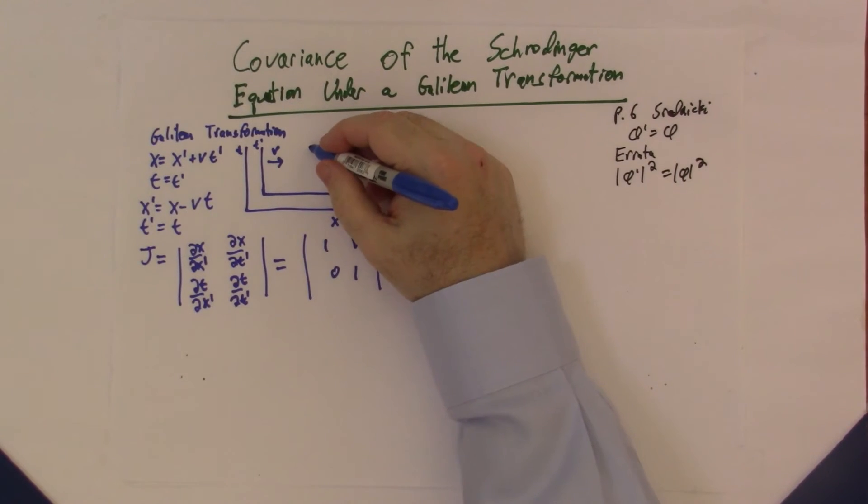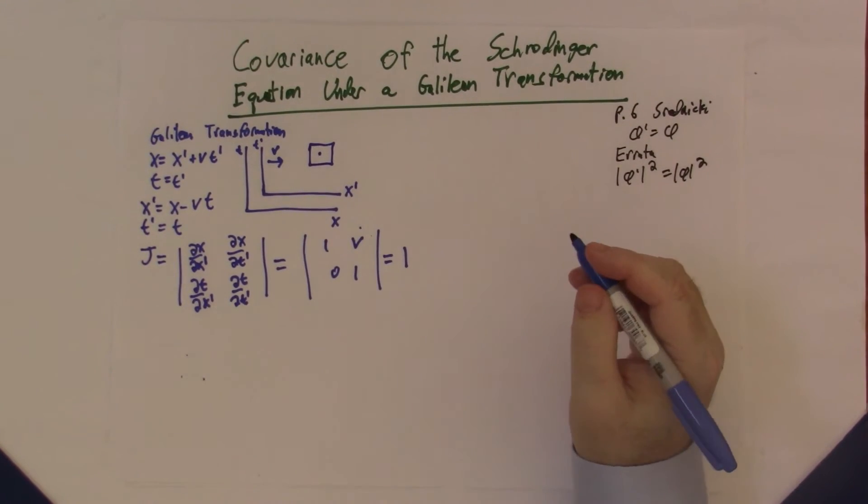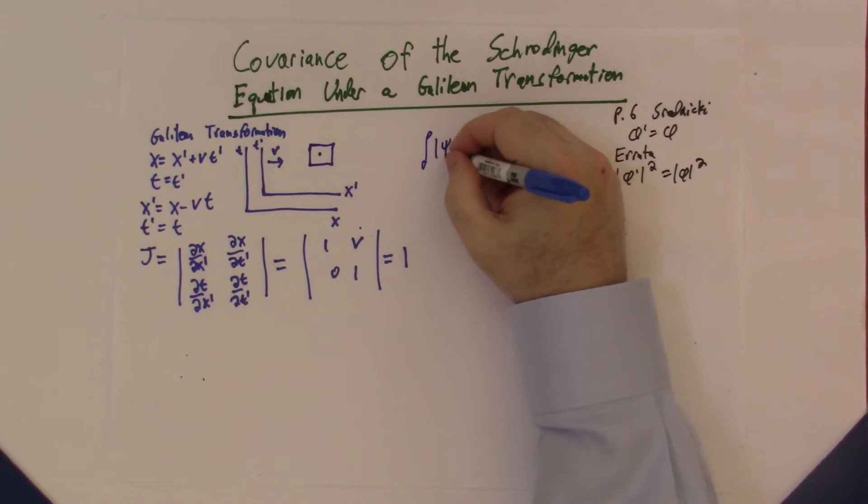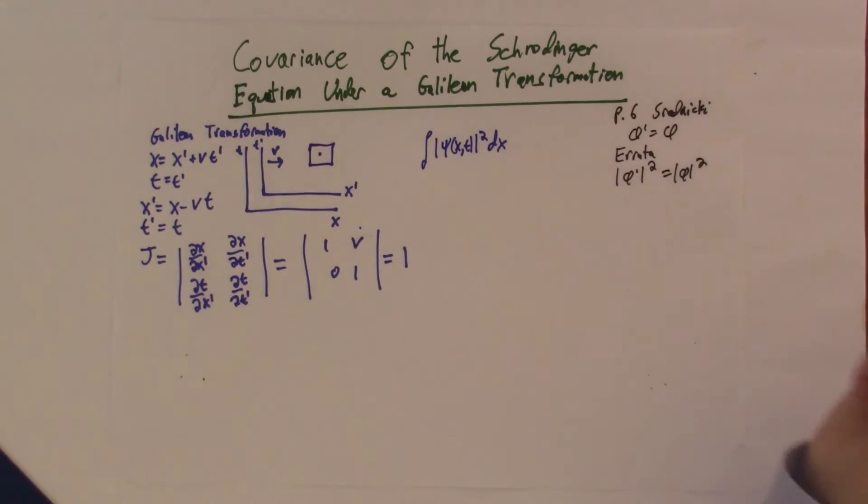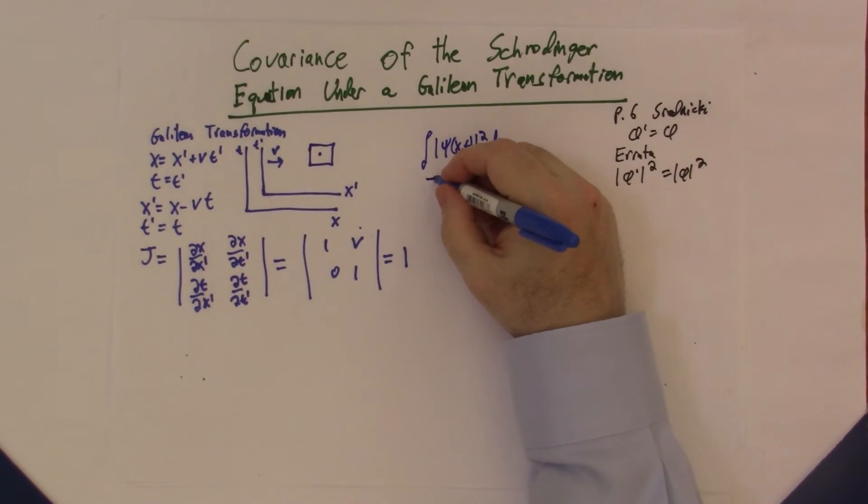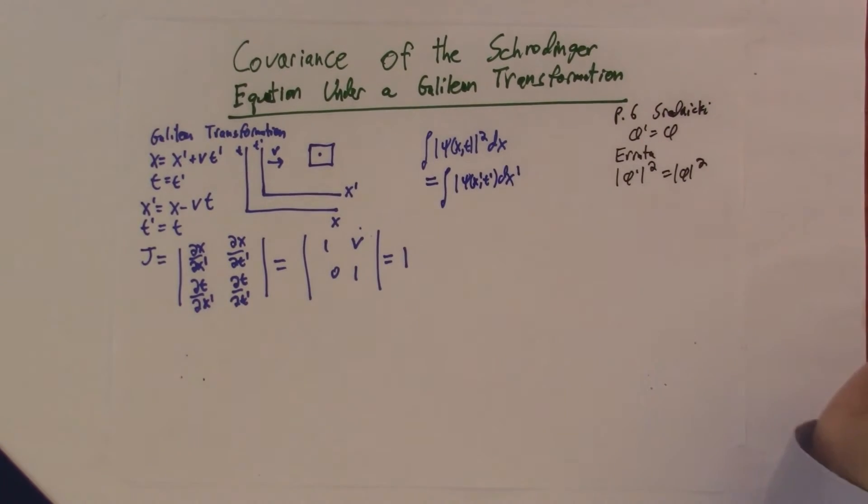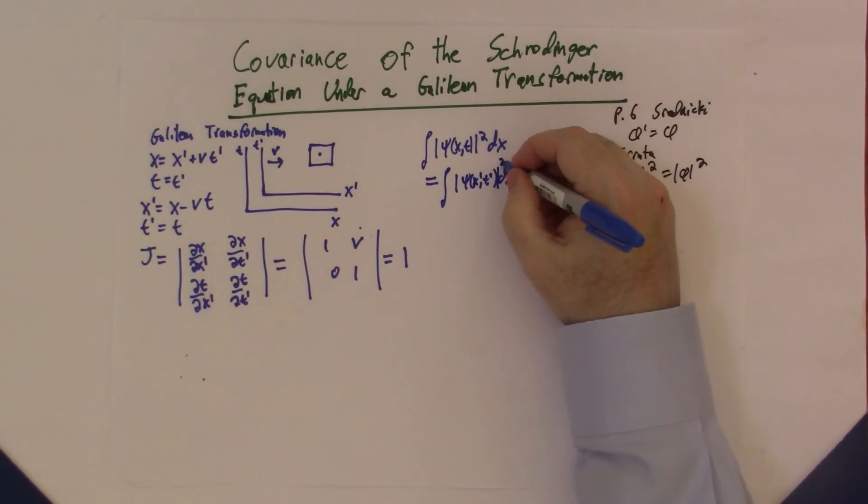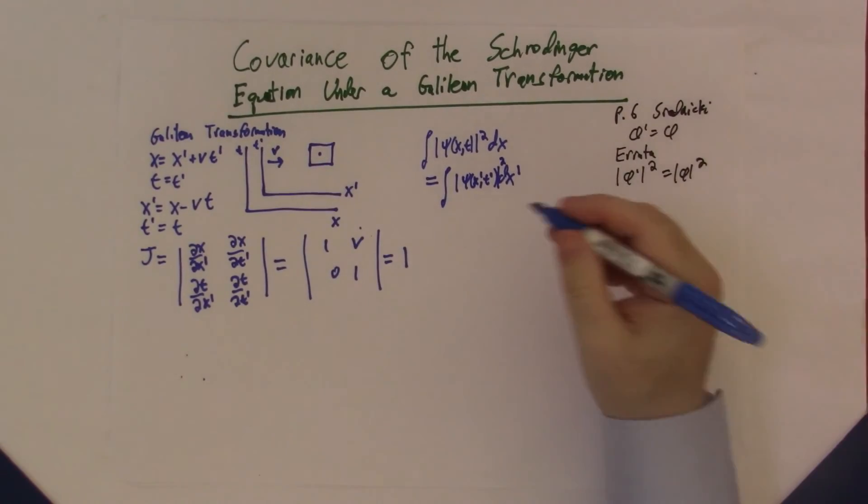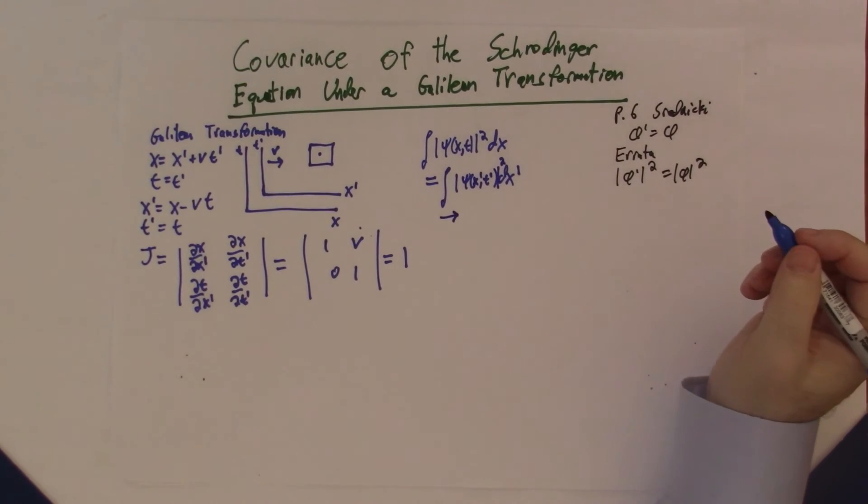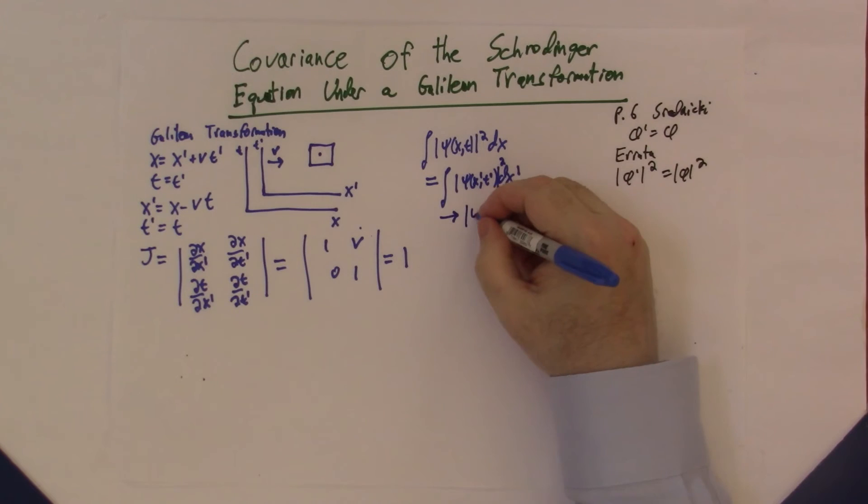This is what we want, because imagine we have a box and we want to know if there's a particle in the box. In one reference frame, we calculate this as the integral of |ψ(x,t)|² dx. In the other reference frame, we calculate it as the integral of |ψ(x',t')|² dx'. We want these to be equal, and this will imply, since we can take the intervals as small as we want,